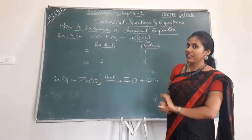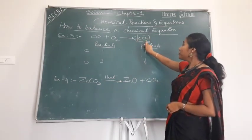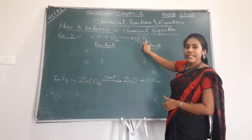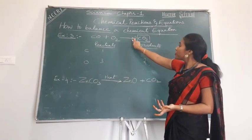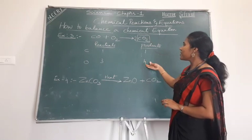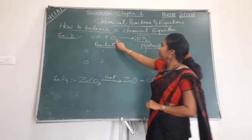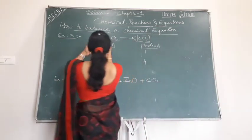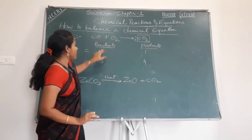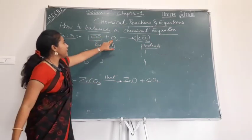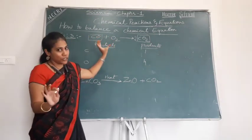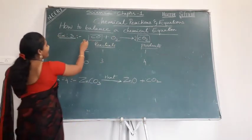Try the digit 2 on CO₂. The molecule already has two oxygen atoms, so multiply: 2 × 2 = 4 oxygen atoms on the product side. The reactant side has one plus two — three oxygens. Now the product side has four and reactant side has three, so the reactant side is less. Start putting a digit there. Try putting 2 in front of CO on the reactant side.